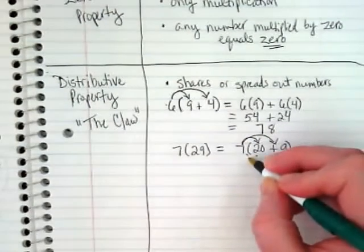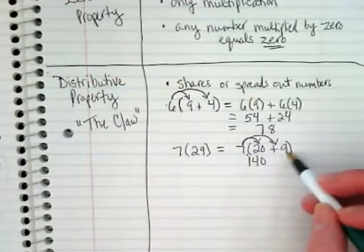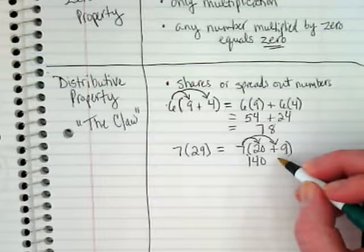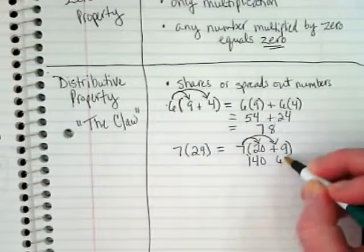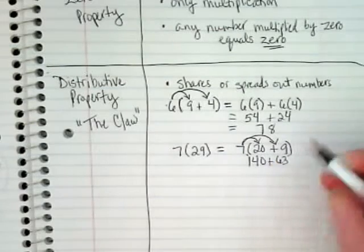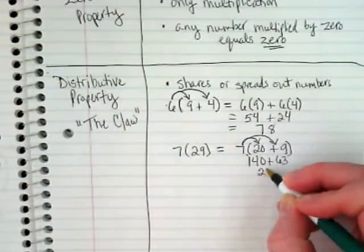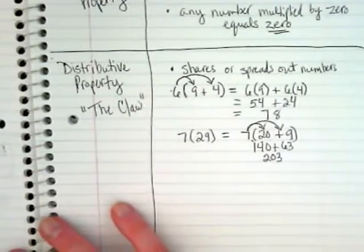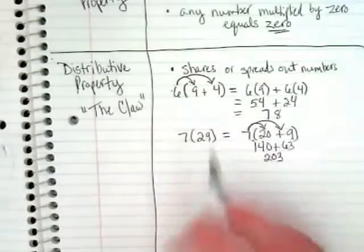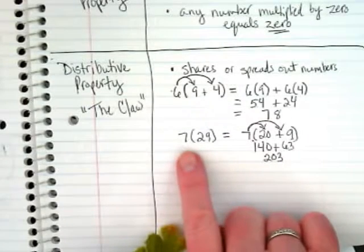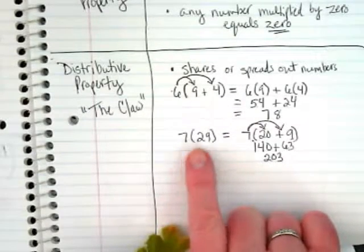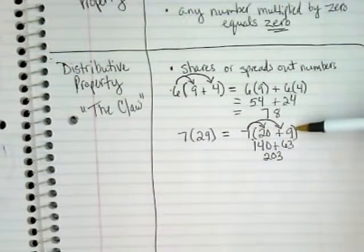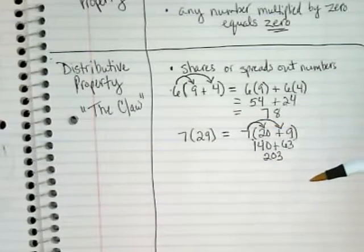And then I could use the claw on it. Seven times twenty is one hundred and forty. Seven times nine? Sixty-three. And that means that my whole number is now two hundred and three. And there's nothing wrong with multiplying seven times twenty-nine as it is, but you probably would have wanted a calculator to do it. By spreading it out we can make these into easier numbers, breaking them apart in ways that we can use them.